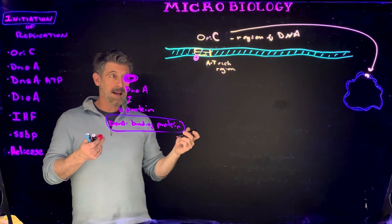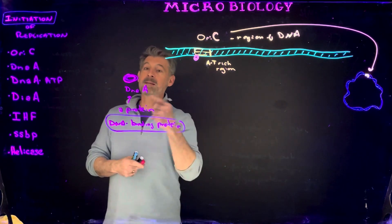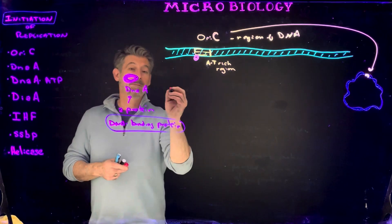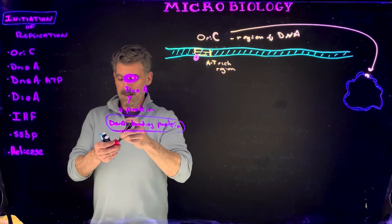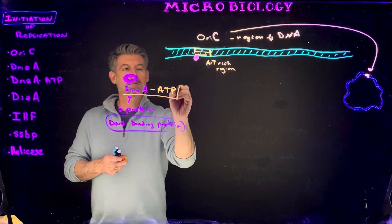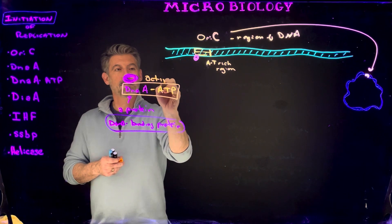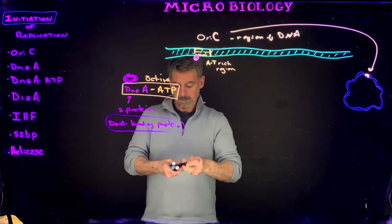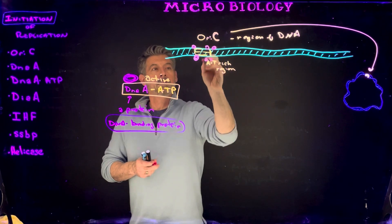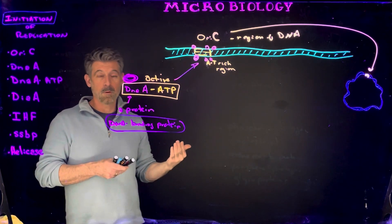And DnaA will bind to the DNA at the region of oriC. Now what has to happen is the assembly of numerous DnaA proteins. So a large number of them. And DnaA can be present in an active or inactive form. So essentially it's activated once it has ATP attached. So DnaA-ATP is an active form. And what will happen is you'll have numerous DnaA molecules binding to oriC.